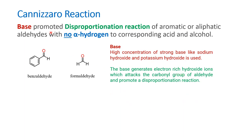Next, the Cannizzaro reaction. This is a base-promoted disproportionation reaction. The base used is usually a concentrated strong base such as sodium hydroxide or potassium hydroxide. Another important requirement is that the aromatic or aliphatic aldehyde must not have any alpha hydrogen. Benzaldehyde and formaldehyde are classic examples — formaldehyde has no alpha carbon at all, and benzaldehyde has no alpha hydrogen on its alpha carbon. That is why both can undergo Cannizzaro reaction.